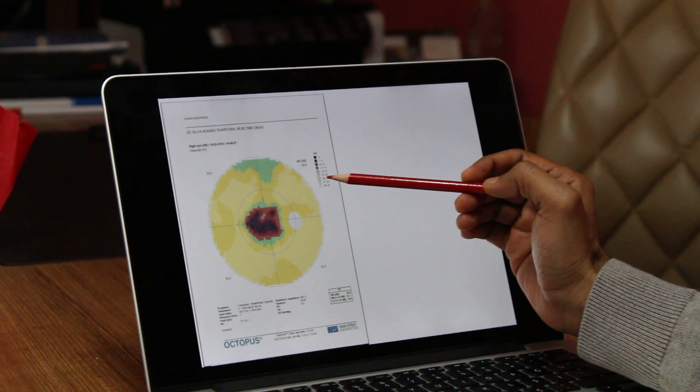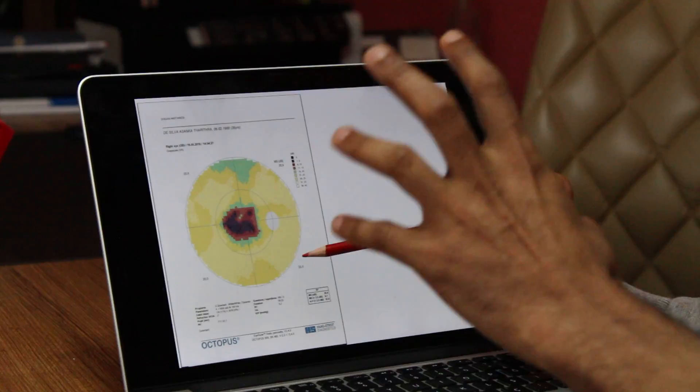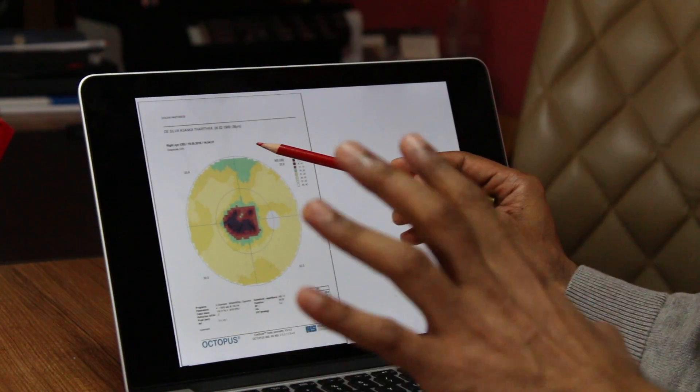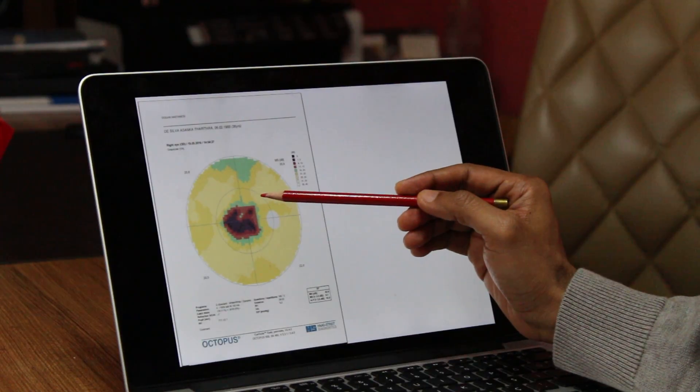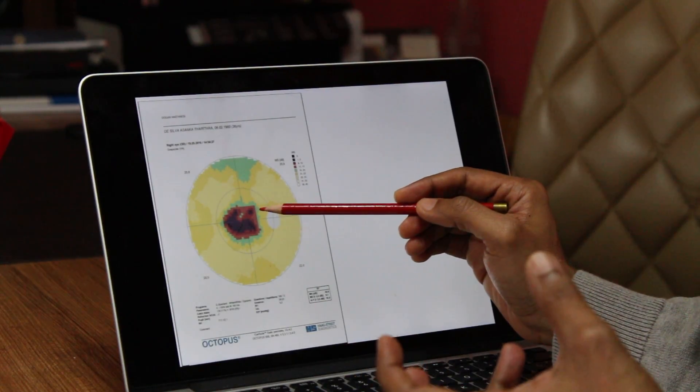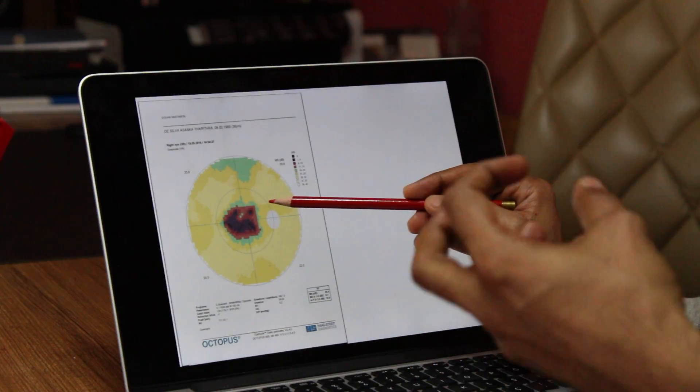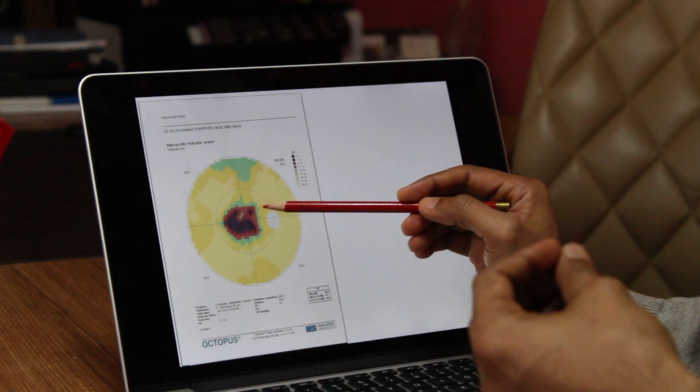So the yellow is actually good, the vision is actually good. Green is not too bad, you can still see from the field, but when it gets darker, you can see red and purple and black, that's where you get the blind spots. You can't see in dark areas.